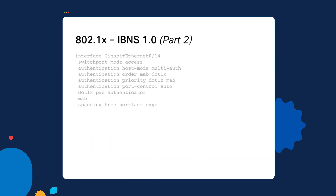Once done, go into the interfaces you intend to configure 802.1x on. The first command is the switchport mode access command, necessary to enable the authentication command to become active. Without setting the switchport mode to access, the authentication command will not be present on the interface. The next command is the host mode configuration, which controls how many MAC addresses we will allow to authenticate on a single interface. By default it's set to single mode, but if you want more than one MAC address to authenticate on a singular interface — especially if you have a hub connected with dozens of different users — then multi-auth is required.